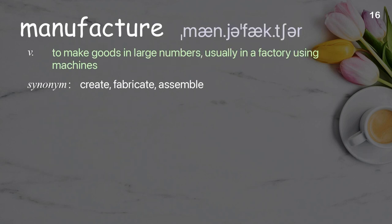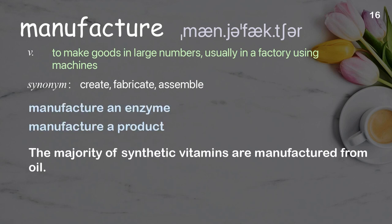Manufacture: To make goods in large numbers, usually in a factory using machines. Examples: Manufacture an enzyme. Manufacture a product. The majority of synthetic vitamins are manufactured from oil.